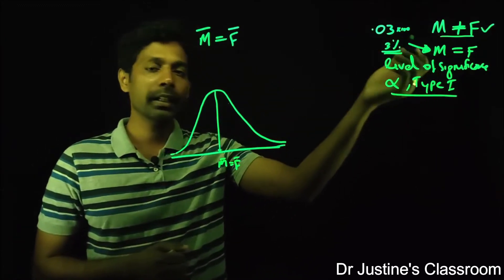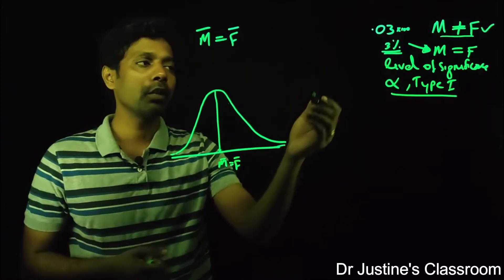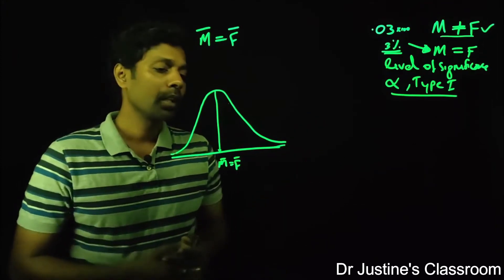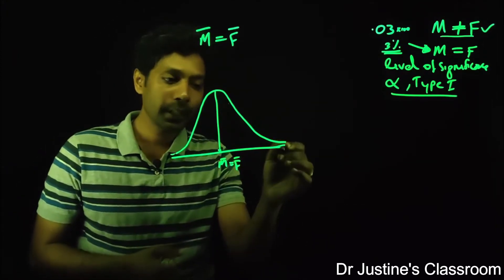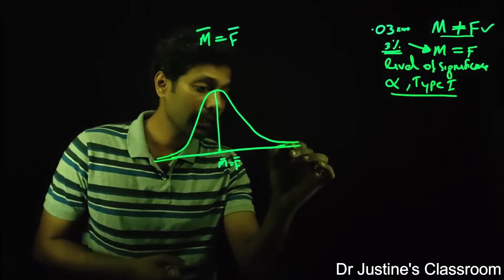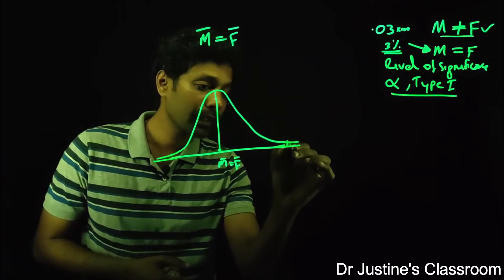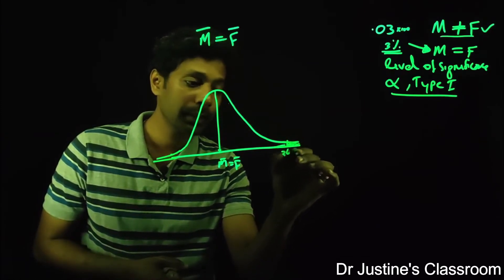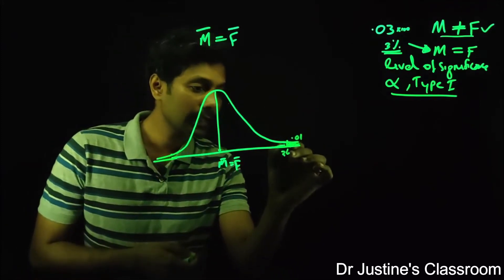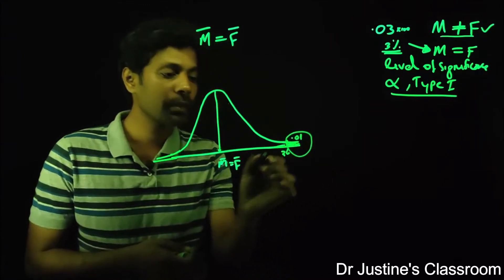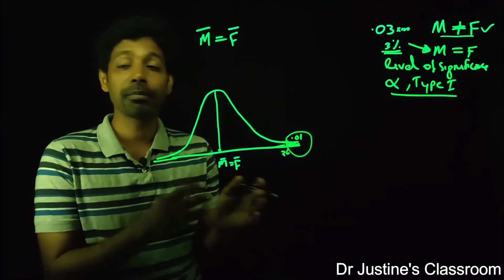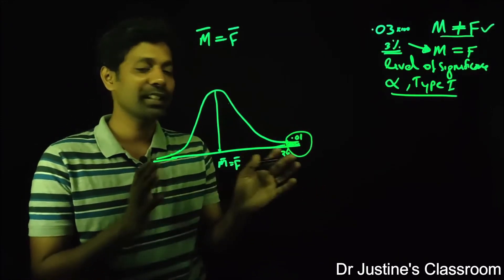When I get a critical value — something like a T value of around three points — and my significance level is at the tail end of the distribution, let us say this area is 0.01, there is this much chance for the null hypothesis to be true that I am just ignoring. It is a possible error — by chance you may get a result like that. This is type 1 error.